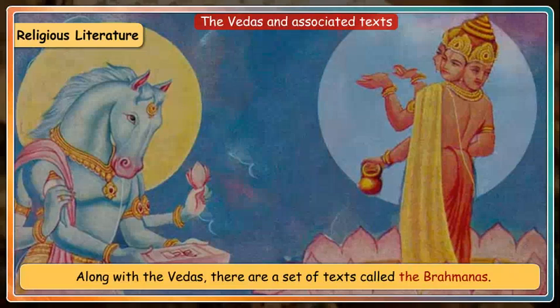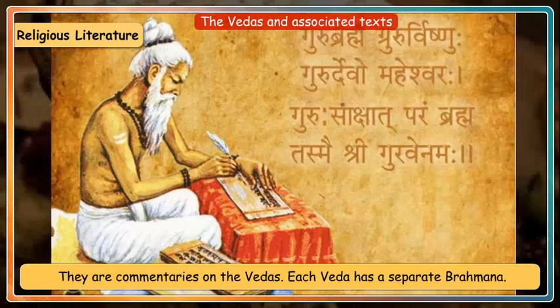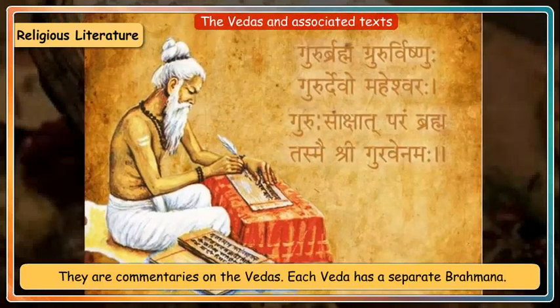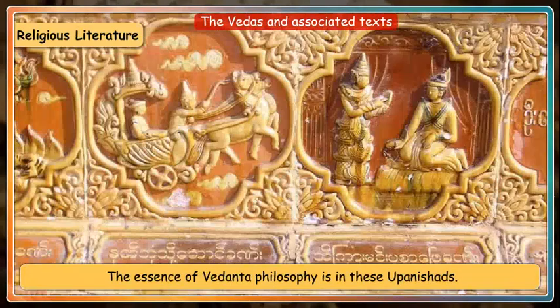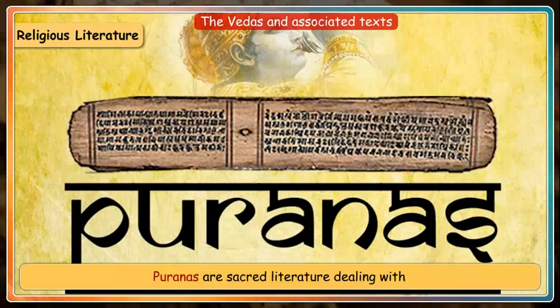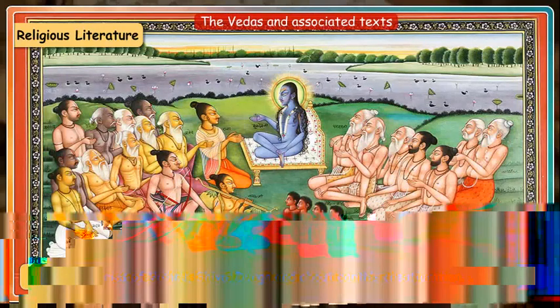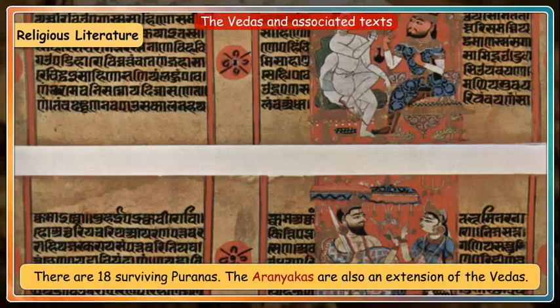Along with the Vedas, there are a set of texts called the Brahmanas. They are commentaries on the Vedas, and each Veda has a separate Brahmana. There are also 108 Upanishads; the essence of Vedanta philosophy is in these Upanishads. Puranas are sacred literature dealing with stories of Vishnu, Shiva, Durga and about Earth's creation. There are 18 surviving Puranas. The Aranyakas are also an extension of the Vedas.